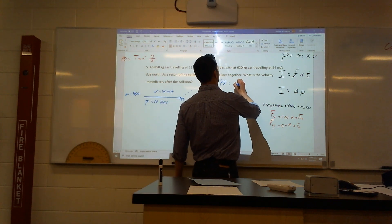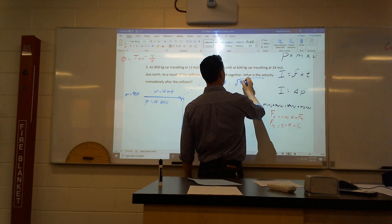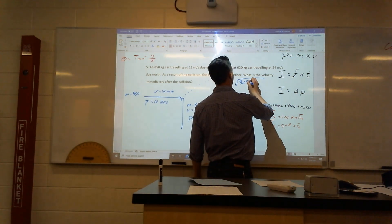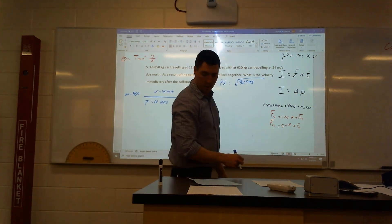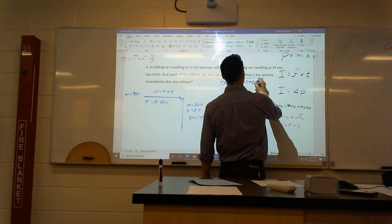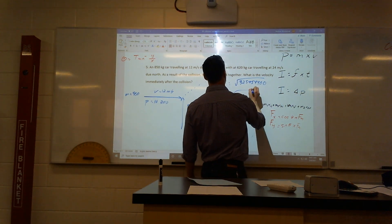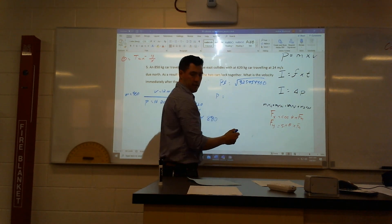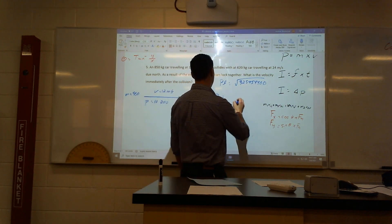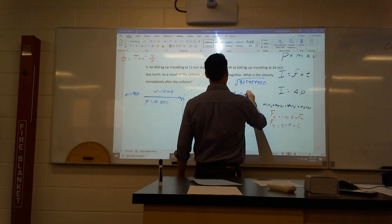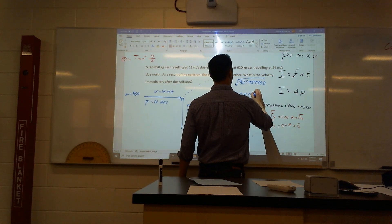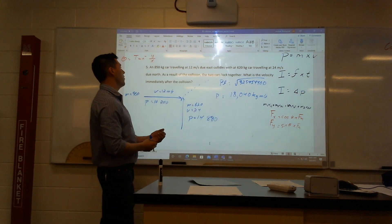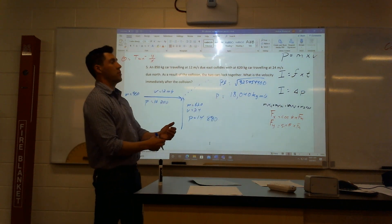10,200 squared plus 14,880 squared. I know the big numbers, I'm sorry. It's big momentum. We're talking about cars here and collisions, it's kind of what happens. When you get to the square root, you should get 18,040. That is momentum final, 18,040 kilogram meters per second.